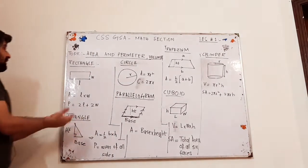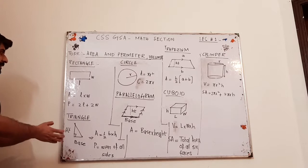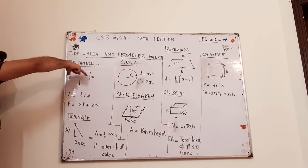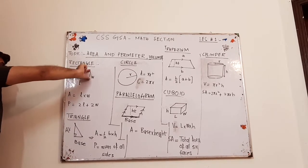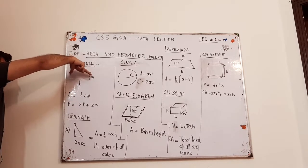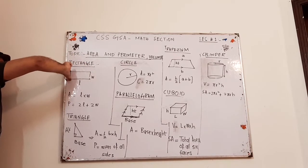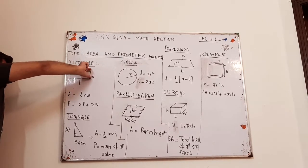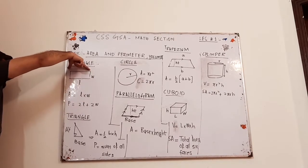The first shape is rectangle. A rectangle is a shape where you have got opposite sides equal in length. This is length, then this must also be length, represented by L. This is the width of the rectangle, then this is also width. Area is obtained when you multiply two sides, so length multiplied by width will give you the area of a rectangle.